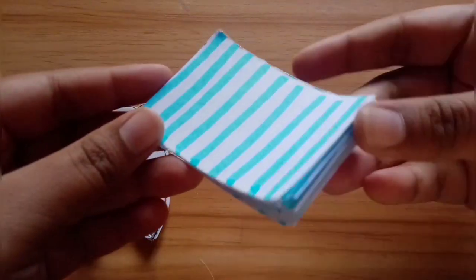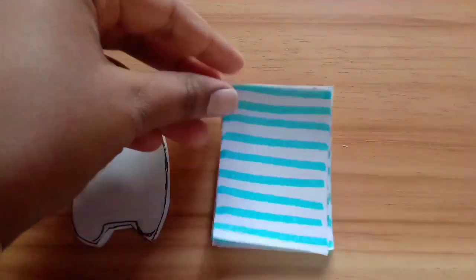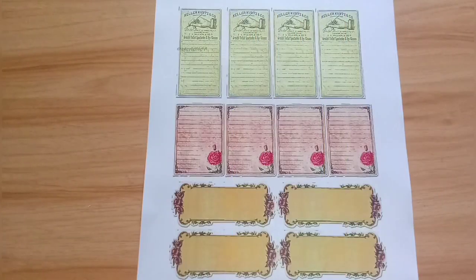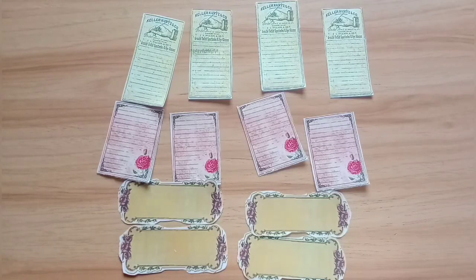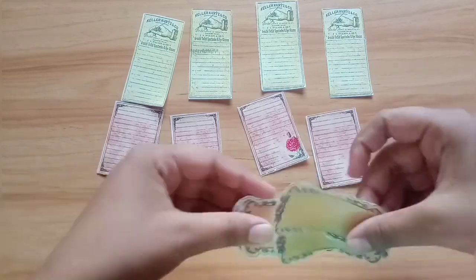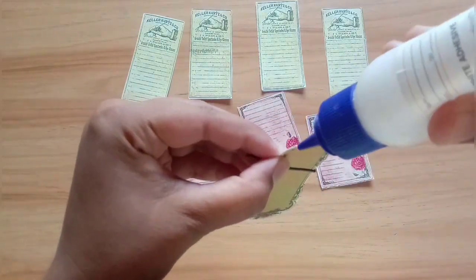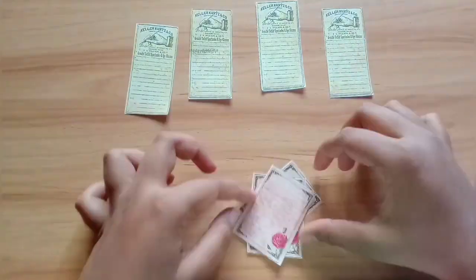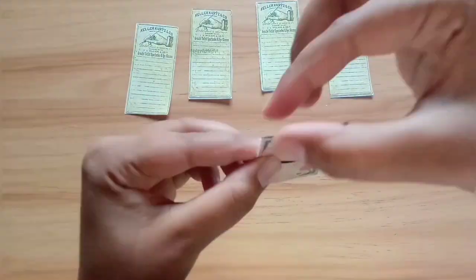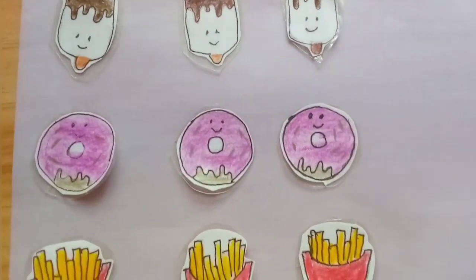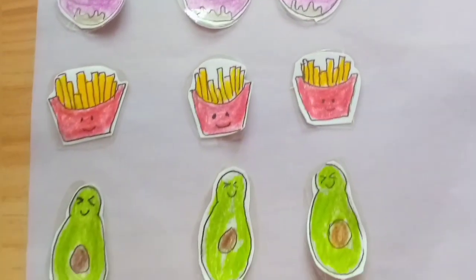Moving on to number four - vintage memo pads. Similar to the vintage stickers, I've printed out some designs you can easily find on the internet. Simply cut them into pieces and stack them up. After arranging them, glue them together on the top corner and leave it to rest.